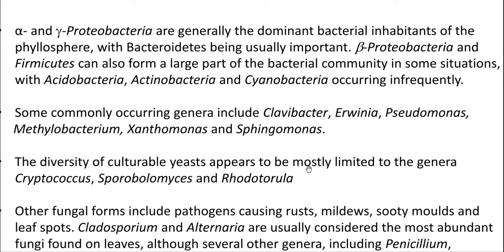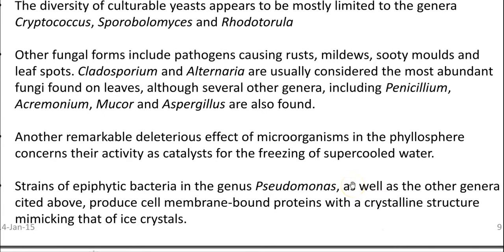The diversity of culturable yeast appears to be mostly limited to the genera Cryptococcus, Sporobolomyces, and Rhodotorula. Looking at the important fungal population in the phyllosphere, fungi present there are mainly plant pathogenic organisms that can cause diseases such as rust, mildews, sooty mold, and leaf spots. Cladosporium and Alternaria are some of the leaf spot-causing fungi present in the phyllosphere. Apart from that, fungi belonging to the genera Penicillium, Acremonium, Mucor, and Aspergillus are also present on the leaf surface.